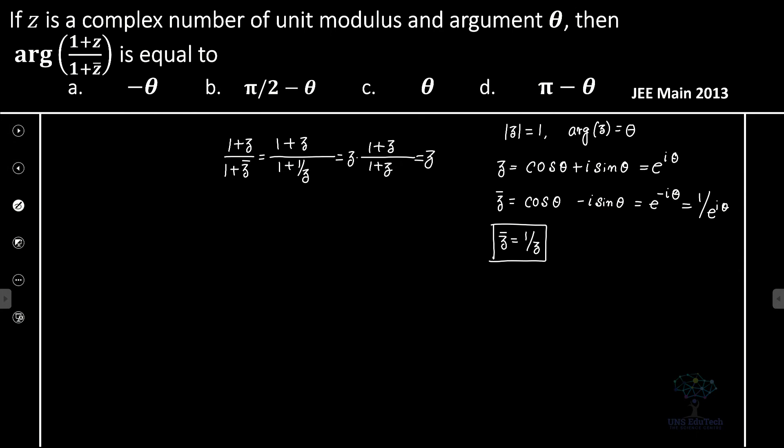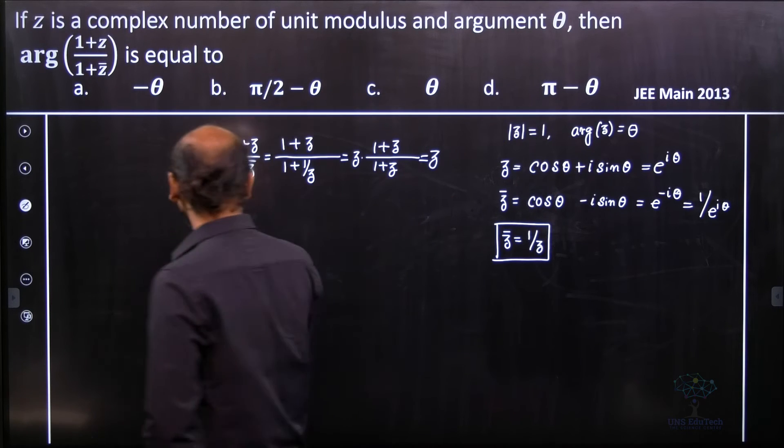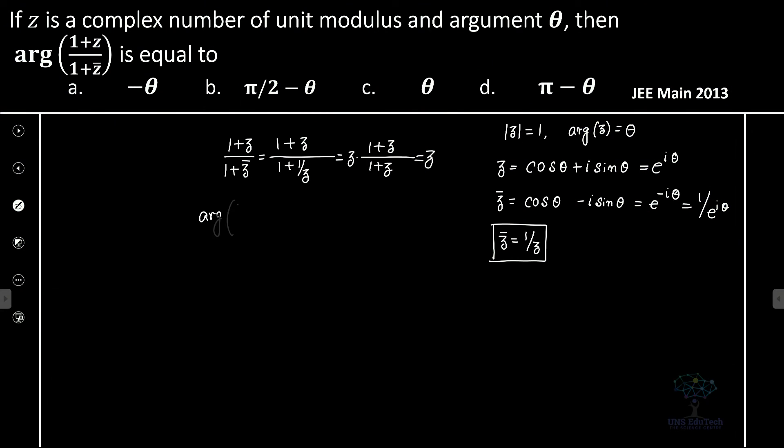So the given complex number is actually nothing but z itself. So therefore, obviously, argument of 1 plus z divided by 1 plus z bar is equal to argument of z, and that's equal to theta.